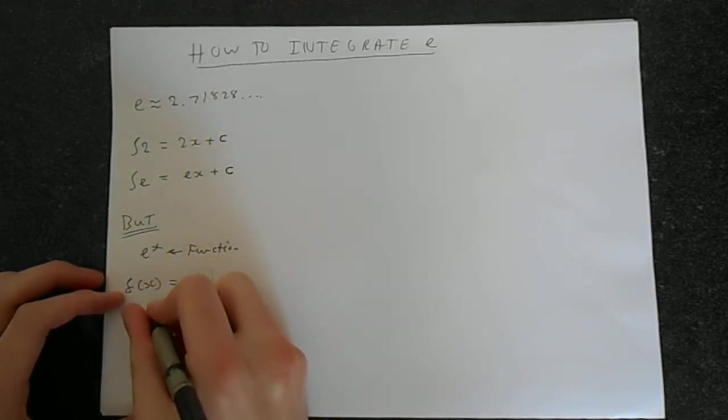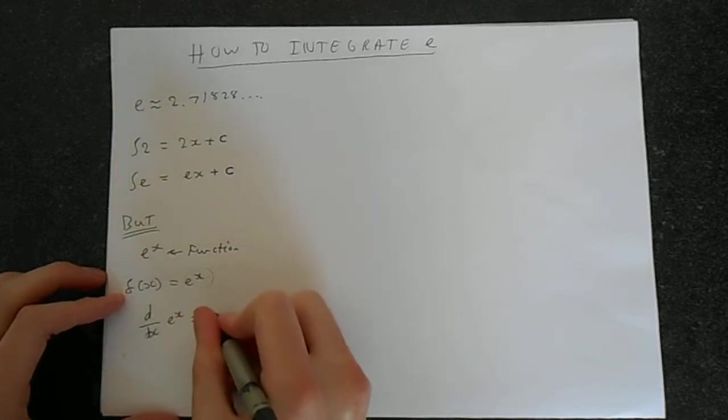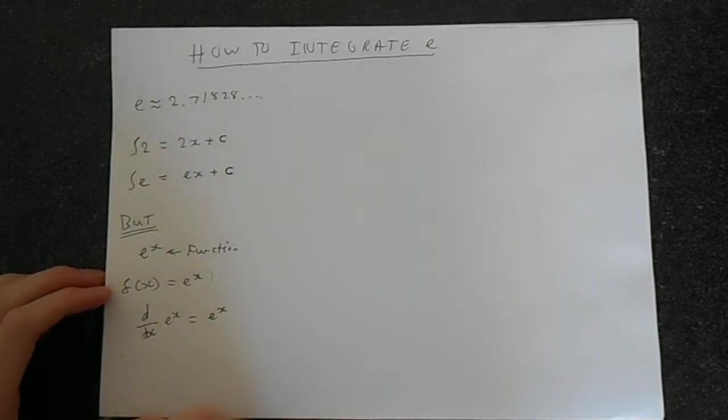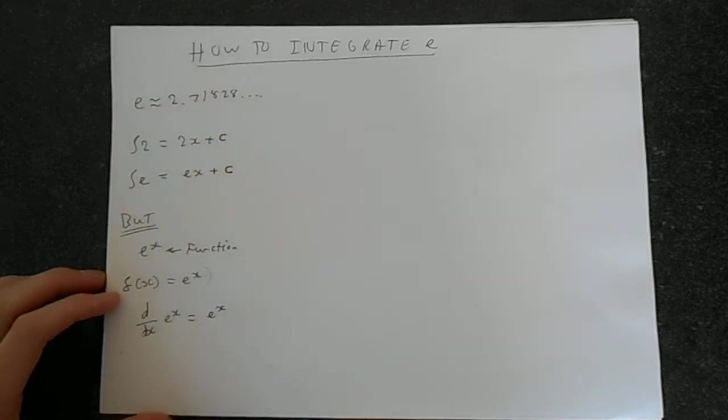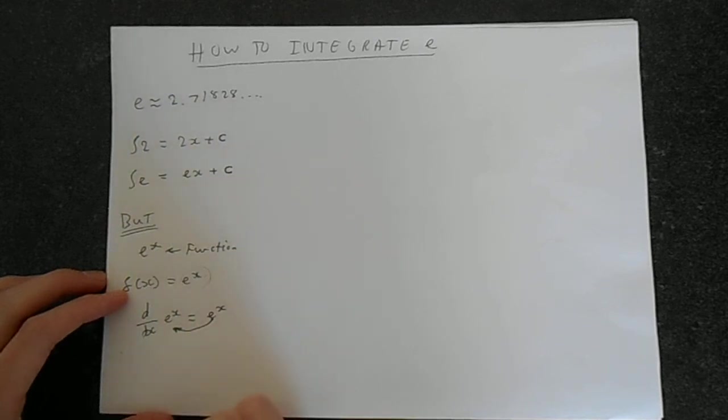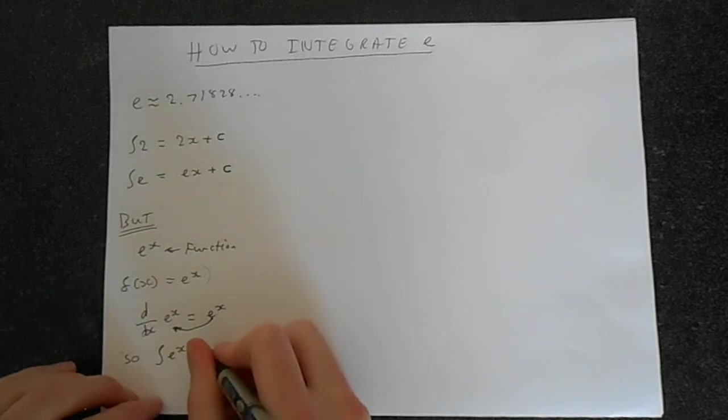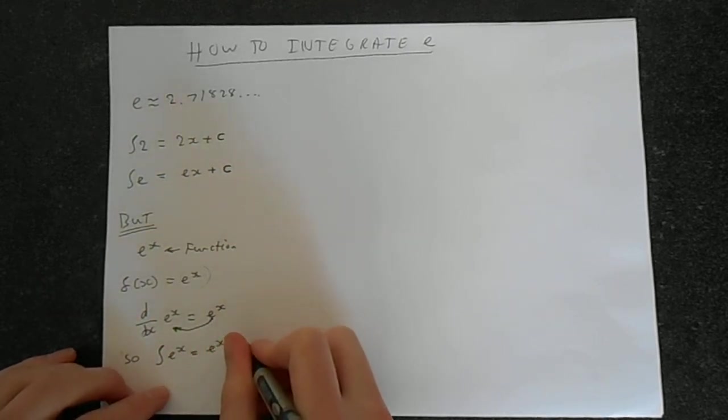From differentiation, we know that the derivative of e^x is e^x. Integration is anti-differentiation; it undoes differentiation so it lets us go backwards. So the integral of e^x is e^x + c.